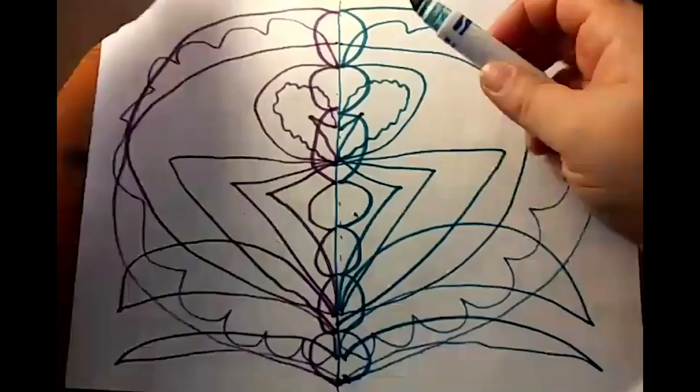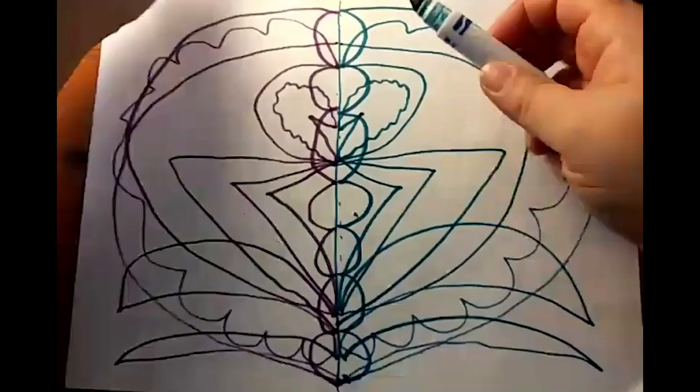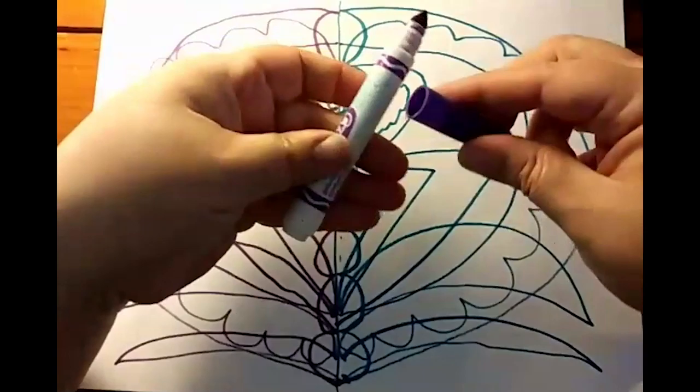When you're done with your markers, always put the caps on and click them. And make sure you've got the right cap on the right color marker. Otherwise, next time you go to use them, you'll get all mixed up. Now that we've done our symmetry drawing, our simultaneous drawing, and breathed a little, and are feeling a little more calm and centered, maybe you'll have an idea about what to make for your art.